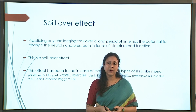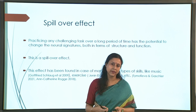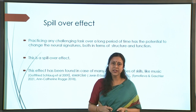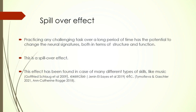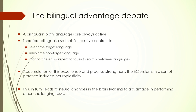The brain changes over our entire lifespan depending on the tasks it has been given to do - this is the spillover effect. Neuroscience research has already shown that different kinds of complex cognitive tasks - music, exercise, and various others - have a strong impact on the brain. Over a prolonged period of practice, the brain shows different structural and functional properties compared to people who have not used those tasks.